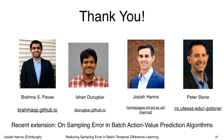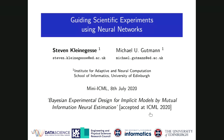Now we continue with a talk from Steven. Steven's paper is called Bayesian Experimental Design for Implicit Models by Mutual Information Neural Estimation, joint work with Michael Goodman. Steven is currently a second-year PhD student in data science, supervised by Michael Goodman. He's interested in Bayesian experimental design, likelihood-free inference, and Bayesian computation. Before starting his doctoral degree, he studied physics at Imperial College London.